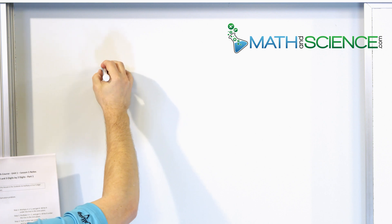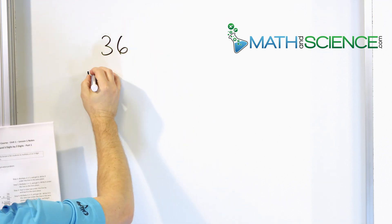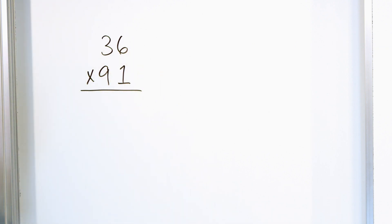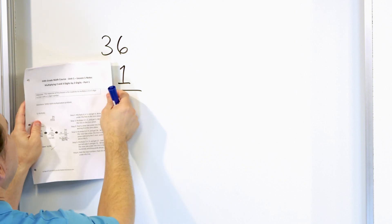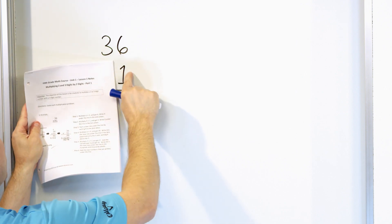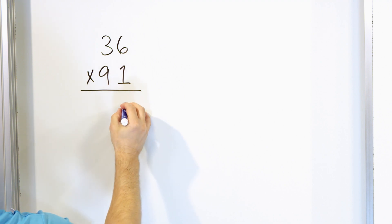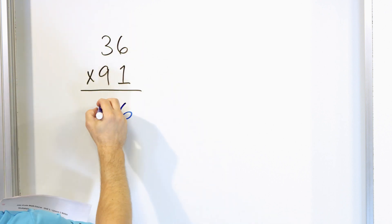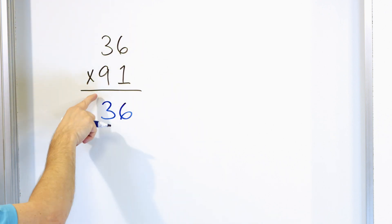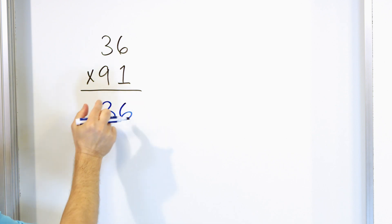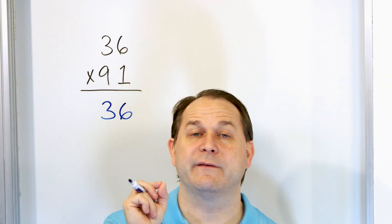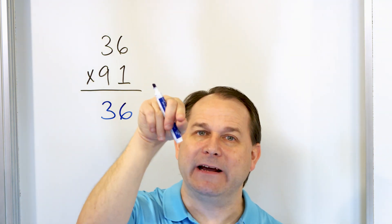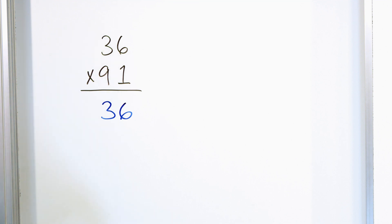Let's take a look at the number 36 and we want to multiply that by the number 91. So how do we do this? The way we do it is first we pretend the nine isn't even there. We multiply one times six and you get a six. Then you multiply one times three and you get a three. I've left a little bit of space between writing the numbers down, which you will understand in just a minute why.